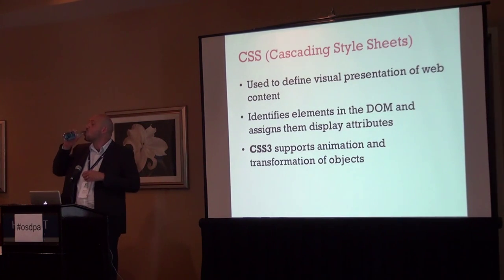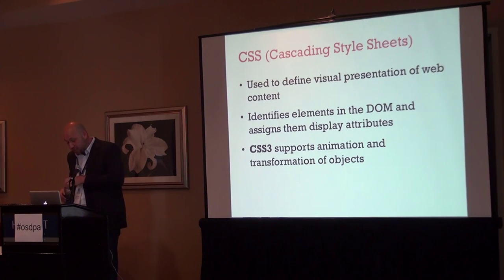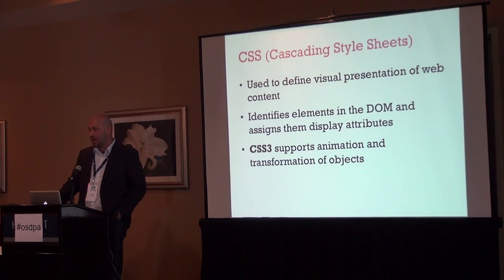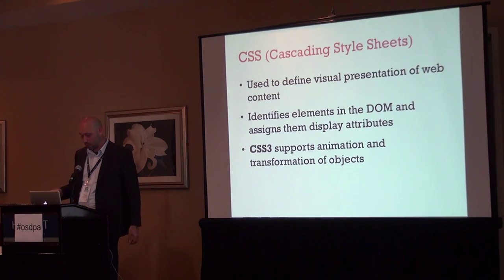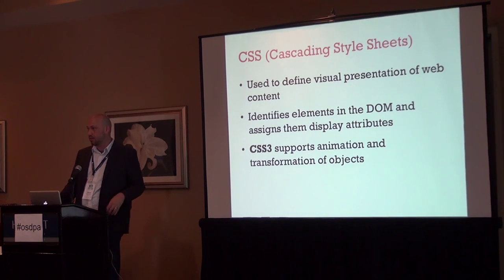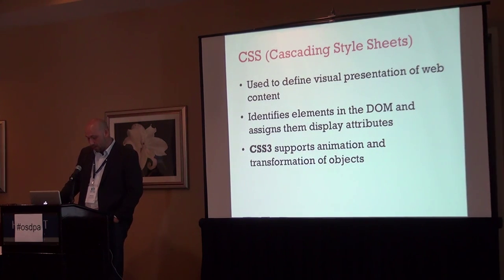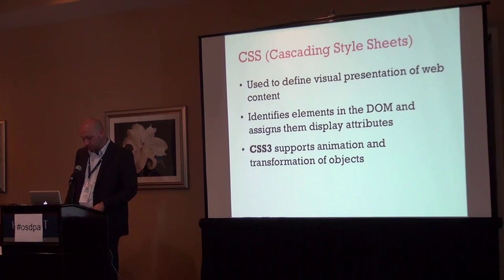CSS — Cascading Style Sheets — is the language used to define the visual presentation of web content. Originally this was a function of HTML, but having the presentation and structure tied together became increasingly problematic as websites became more complicated. CSS allows us to separate the presentation of the content from its structure into two separate documents. CSS works by assigning display attributes to elements within the DOM, letting you specify all aspects of layout and display. The latest version, CSS3, even lets you do basic animation and transformation of elements on the page.